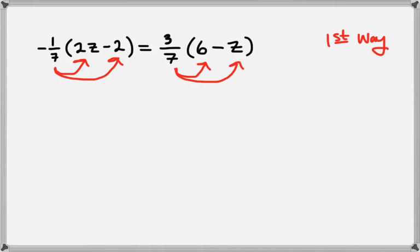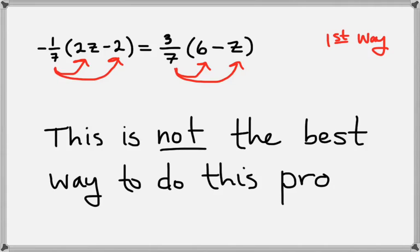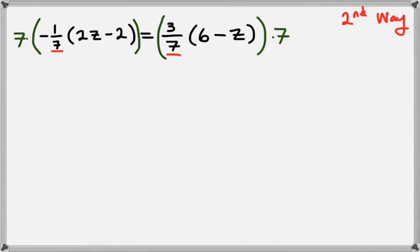But on this one I want to show you a faster way to do it — the distribution way is not the best way. We can notice that on both of these fractions the denominator is 7. So what we can do is multiply the whole equation by 7 on both sides. Since we did that to both sides, this is valid. On the left hand side, that 7 and the 1 seventh are going to cancel, and on the right hand side the 7 in the numerator and the 7 in the denominator will cancel as well.